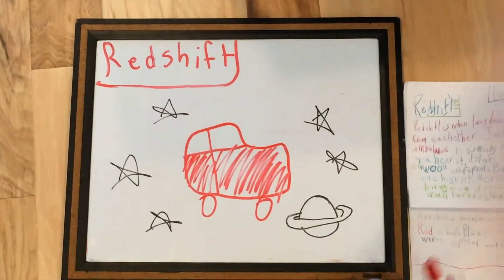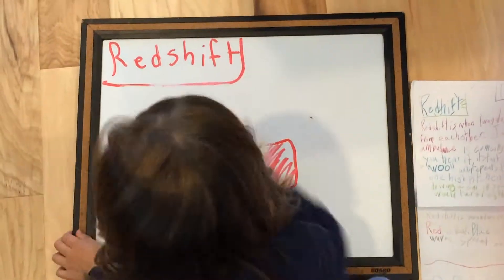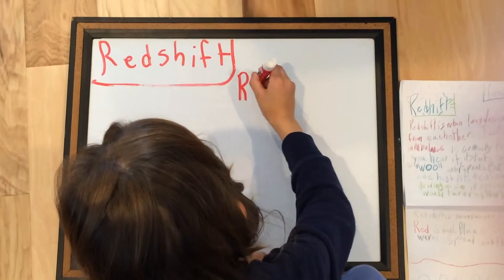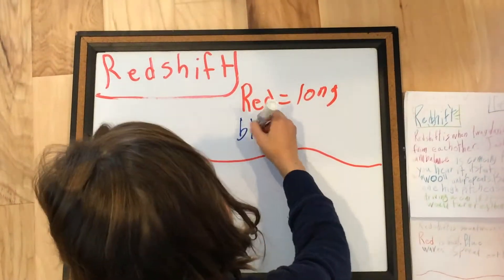Redshift is when sound waves are coming and going. Red light waves are long. Blue light waves are short.